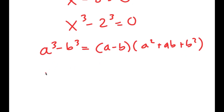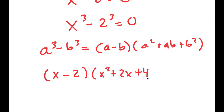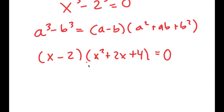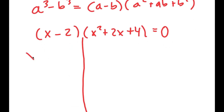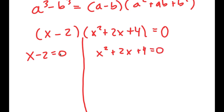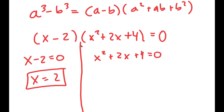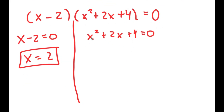So in this case this turns into x minus 2 times x squared plus 2x plus 4 is equal to 0. So now I get two equations: x minus 2 equals 0 and x squared plus 2x plus 4 equals 0. For x minus 2 equals 0 I get x equals 2, which was the solution we already got. But on top of this we have a whole other equation with two more solutions because it's a quadratic equation.